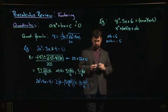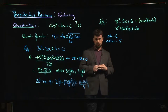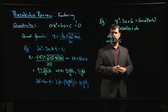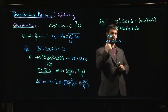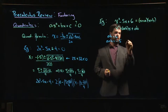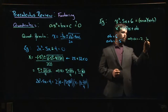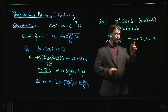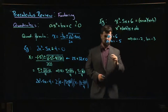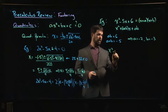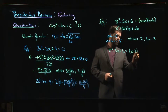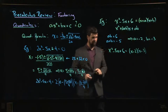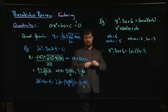You need two numbers that multiply to give 6 and add to give minus 5. The possibilities are 1×6, 2×3, −2×(−3), and −1×(−6). Of those, the only pair that adds up to minus 5 is a = −2 and b = −3 (or vice versa — order doesn't matter). So x² − 5x + 6 factors as (x − 2)(x − 3). That's your typical factoring scenario.